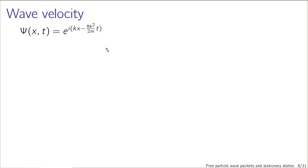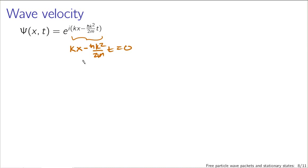Let's talk about the wave velocity in particular. This is our traveling wave solution, and we can figure out what its velocity is by looking at the argument. Which direction is this wave going? If we look at a particular point on this wave as time evolves, we can figure out where that point is by setting the argument equal to a constant — I'll set it equal to zero: kx − (ℏk²/2m)·t = 0. If t increases, the second term gets more negative, so x has to increase as well. So as t increases, x increases — this wave is moving to the right.